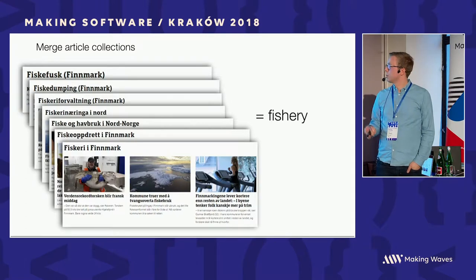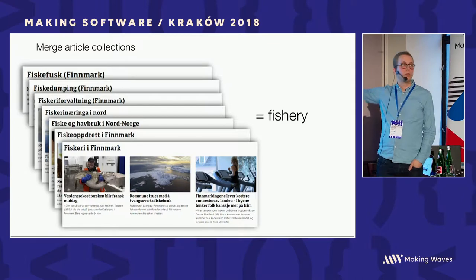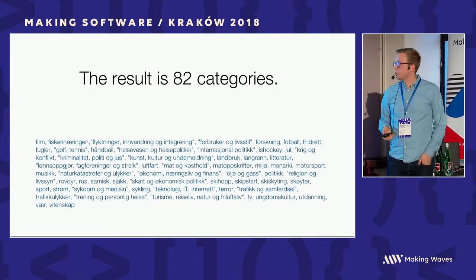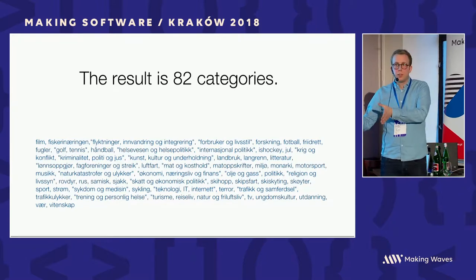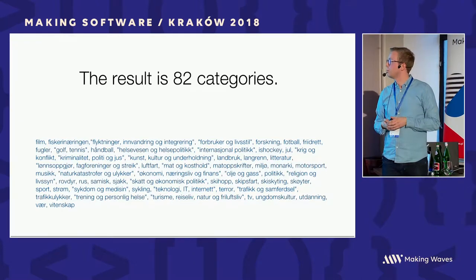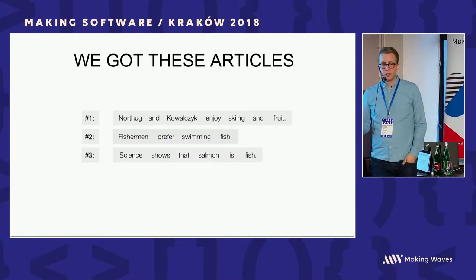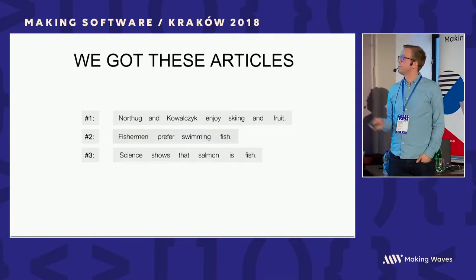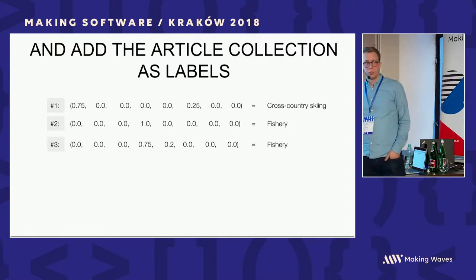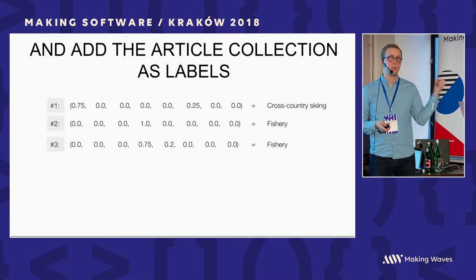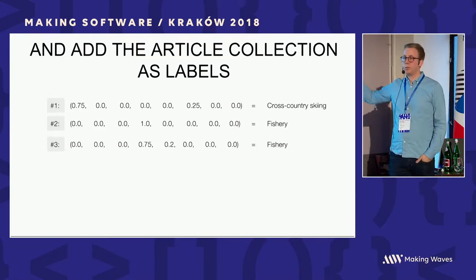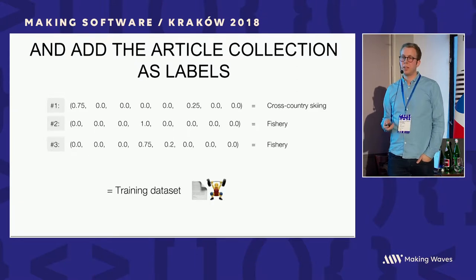When it comes to duplicates, we can just merge them together and say all of those articles can be used as training data for the new category 'fishery.' The result of combining what we wanted and what we had training data for was around 82 categories. So with articles represented as article embeddings and labeled with the article collection a journalist put them in, we have our training dataset — the top one is about cross-country skiing, the other about fishery.